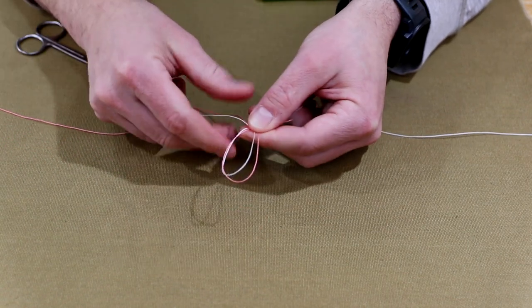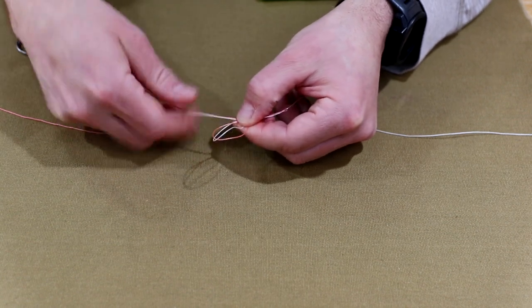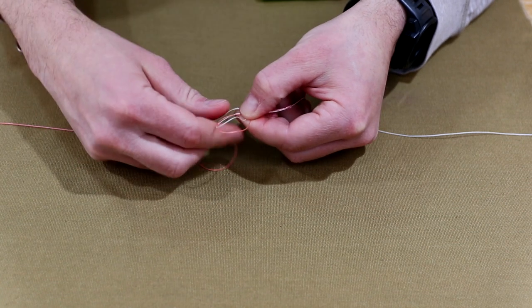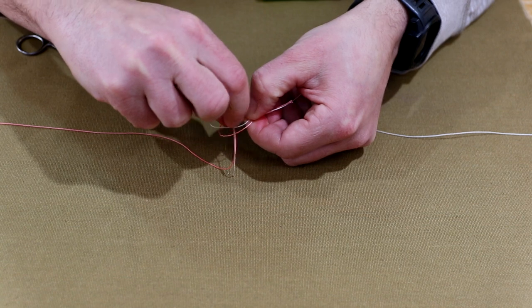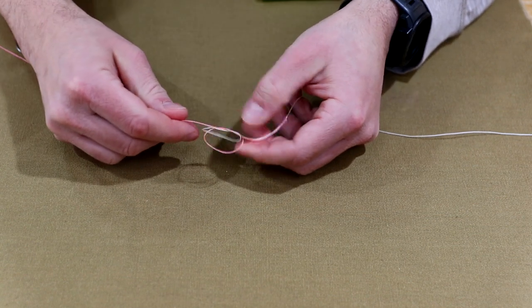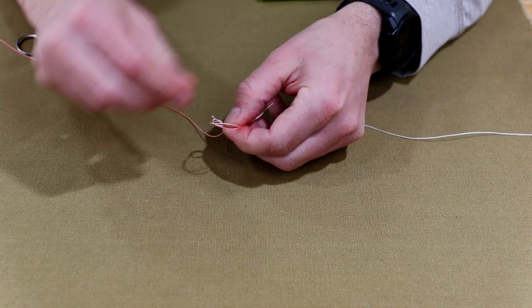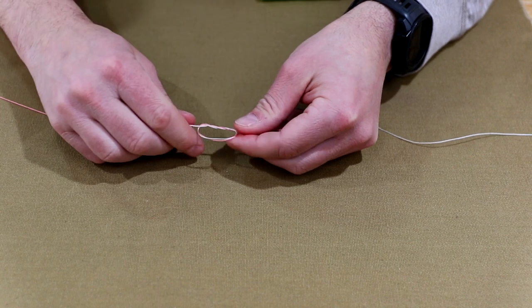So we're going to create a loop, and all we're going to do is take the tag ends here and pull those tag ends through once. So there's one, that's not double surgeon's yet, hold on, now hold your horses, and there's two. So there's your double surgeon's.